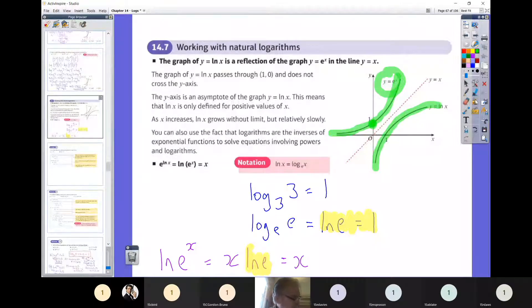So on your calculators, if you've got them to hand, if you go and press ln and then you go and pick up e, which is the red, the alpha function, the red function of the bottom middle button. If you ln e, you will indeed get one.